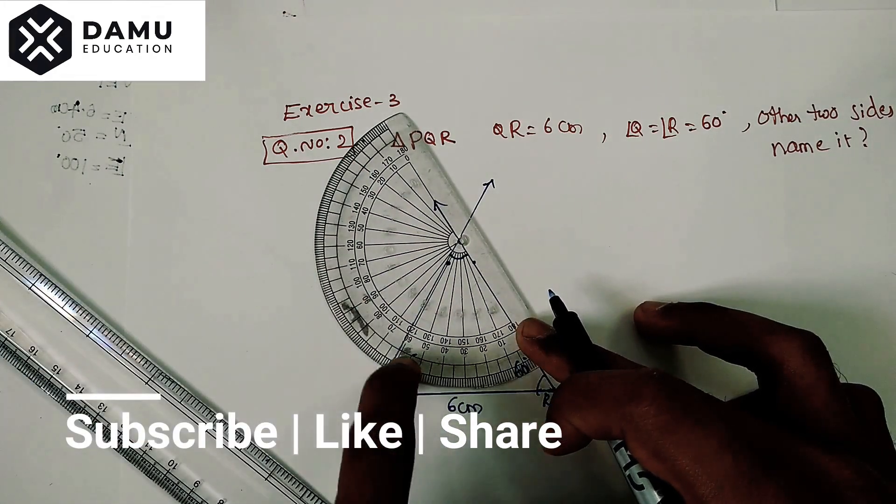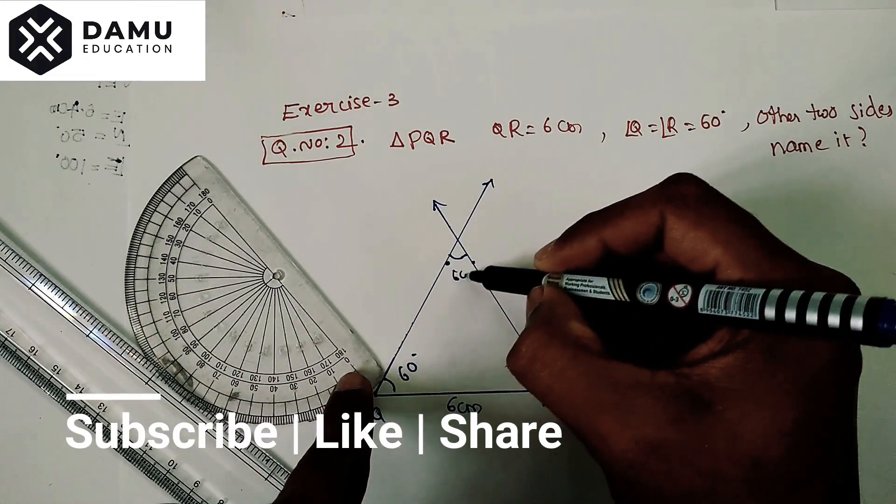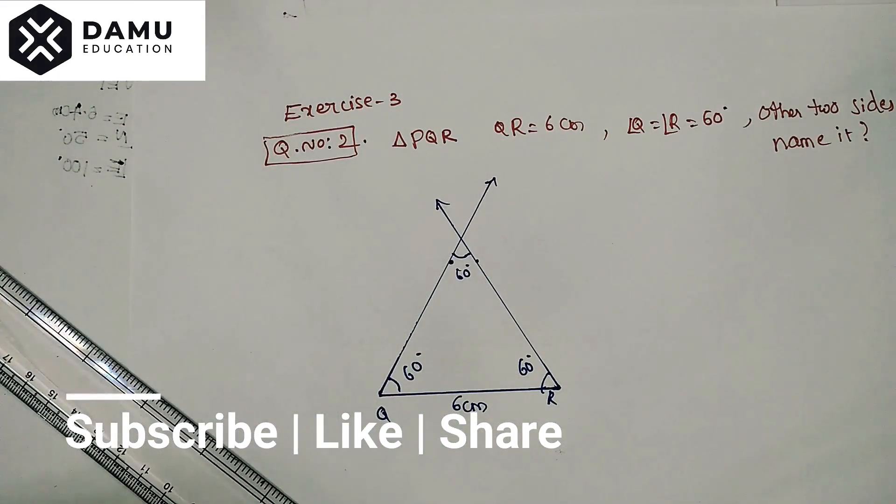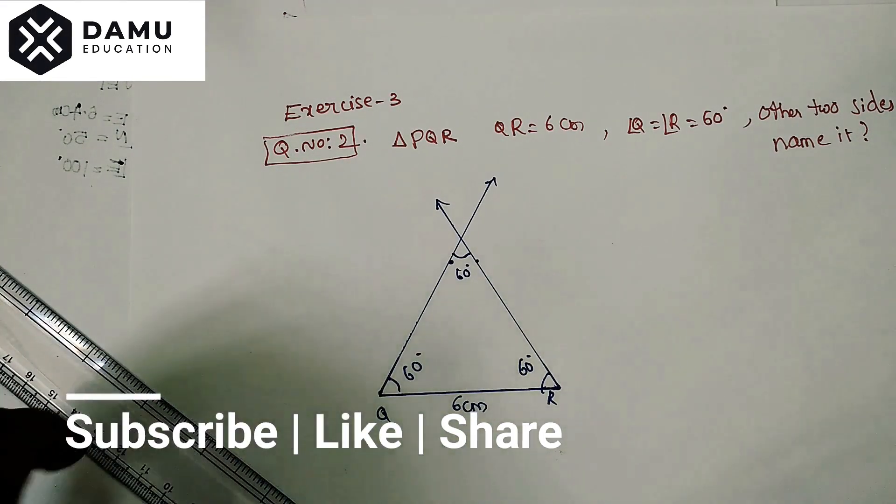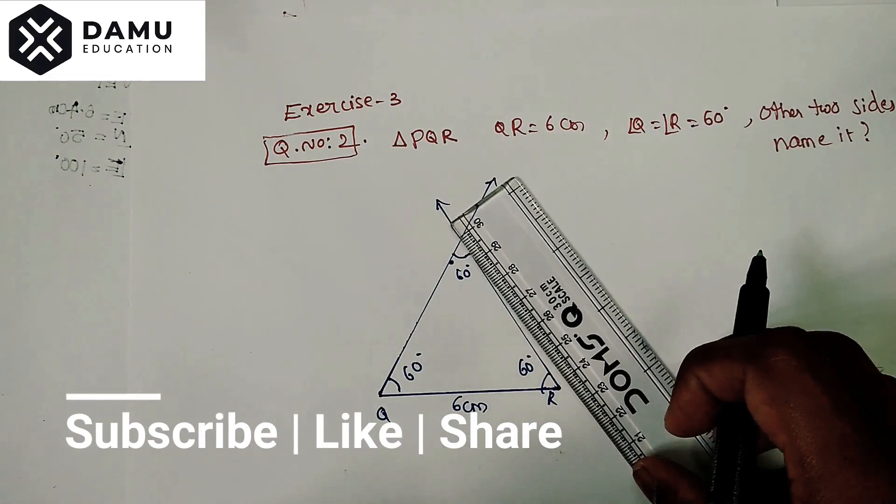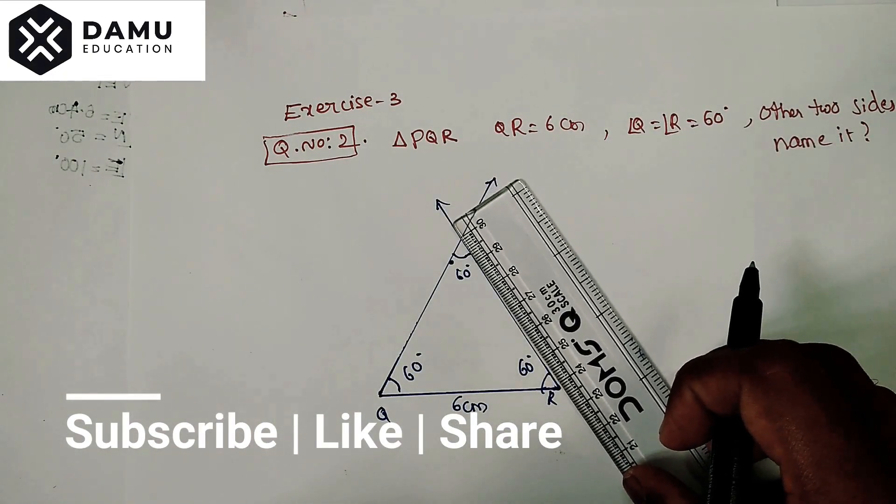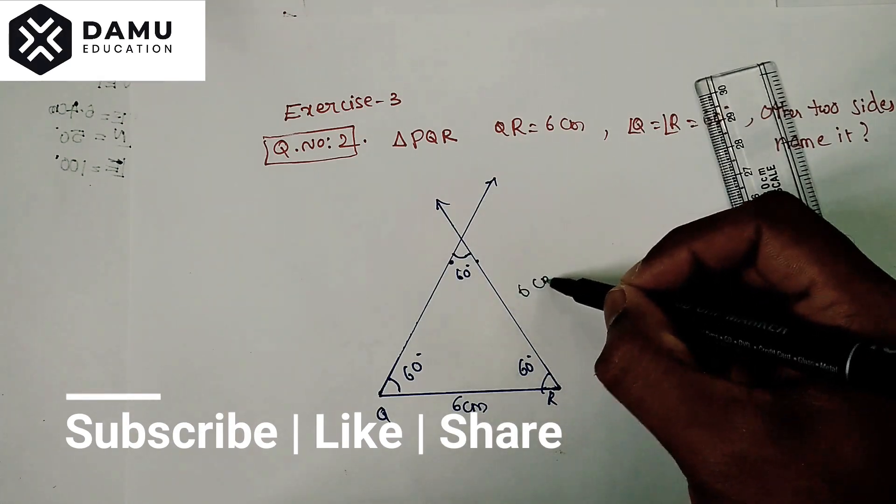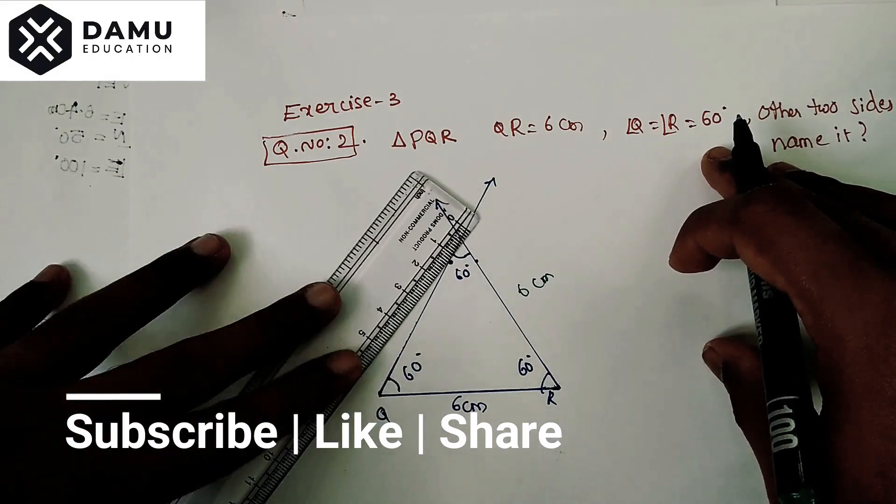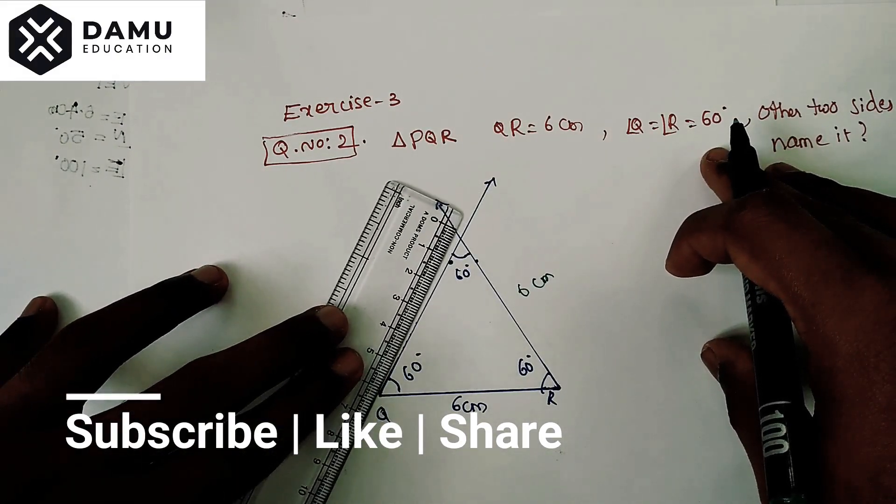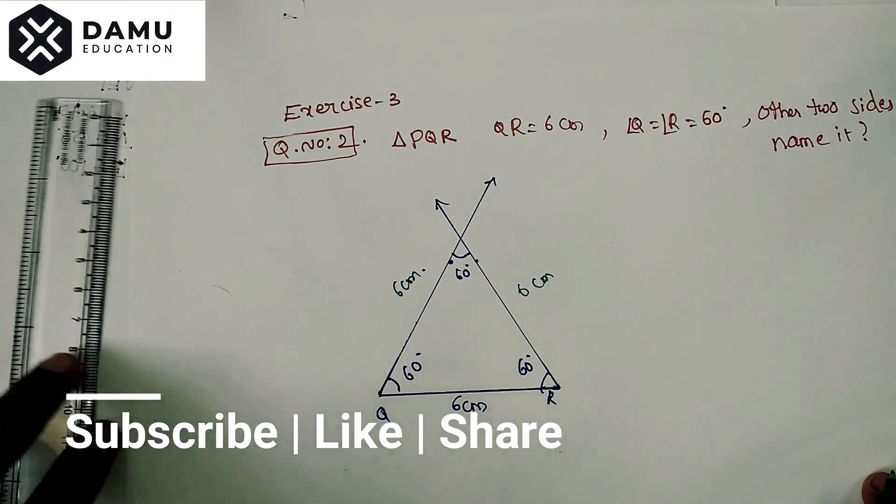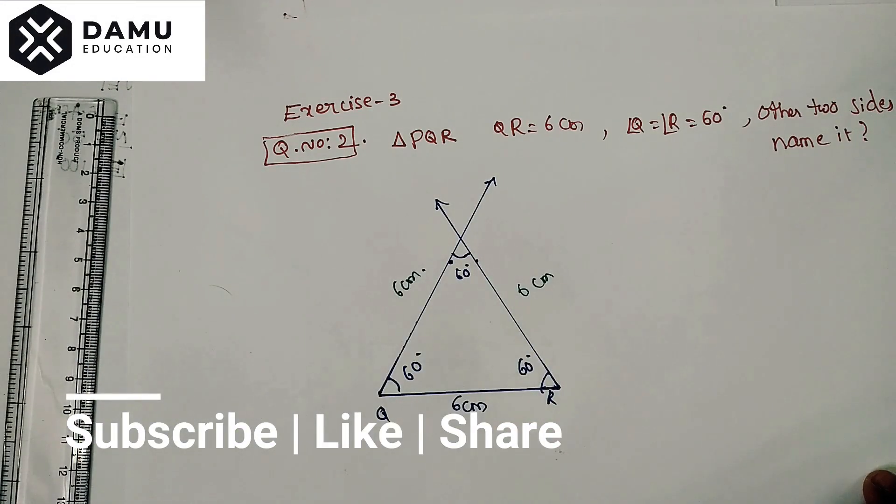If you measure those two sides, the other two sides, what we'll get is we're going to check what are the measurements of this. From 30 I'm measuring, 30 to 24 is 6 centimeters, this also. So from 0 to 6 centimeters. What triangle is it? All sides are equal.